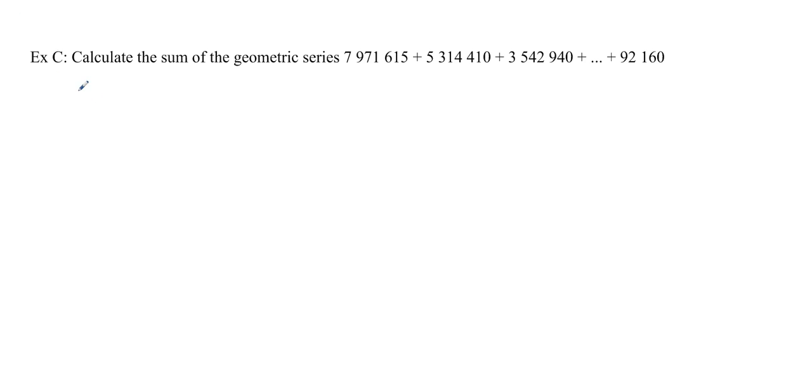And this is our last question. Calculate the sum of the geometric series. So I know my first term is going to be 7,971,615. And I'm adding up all the way to 92,160. And I don't know what n is and I don't know what r is. But I can find r really easily, which is by dividing. So if you do 5,314,410 over 7,971,615, we get 2 over 3.